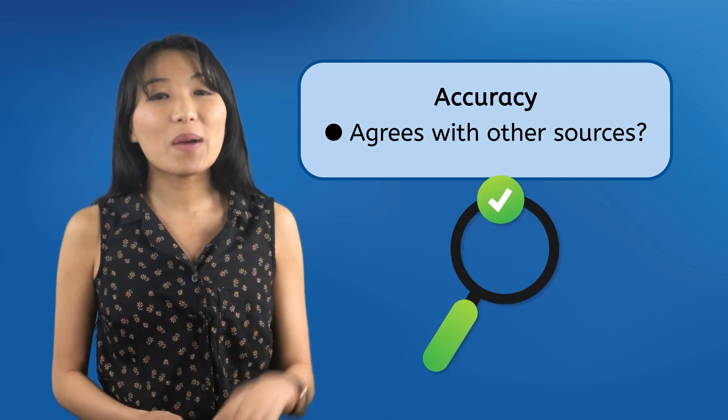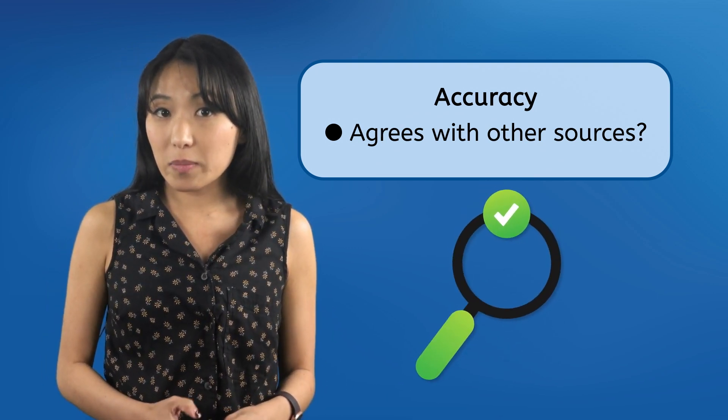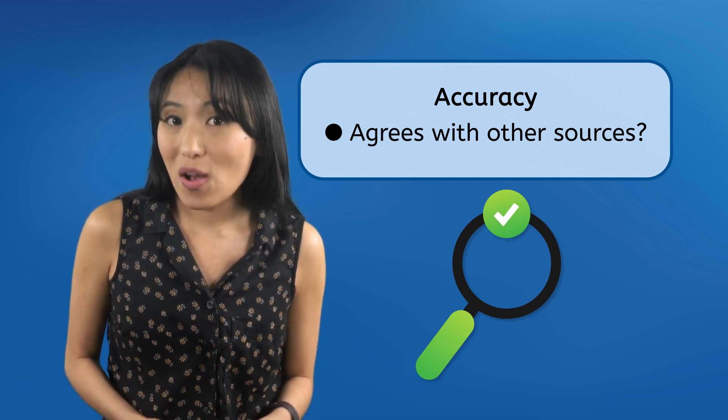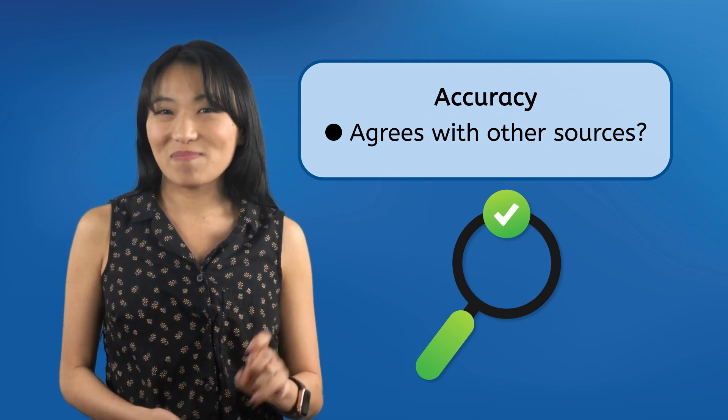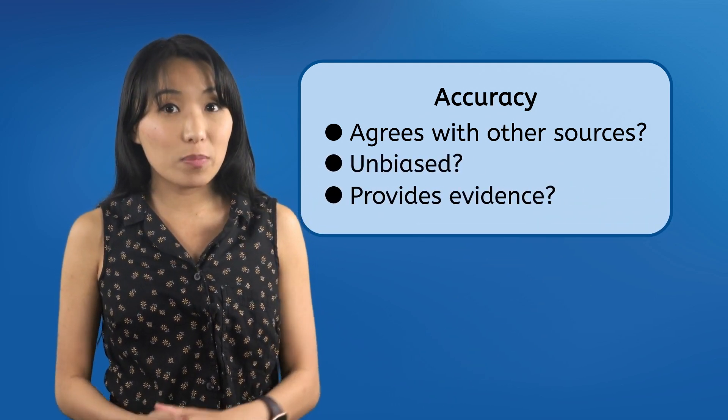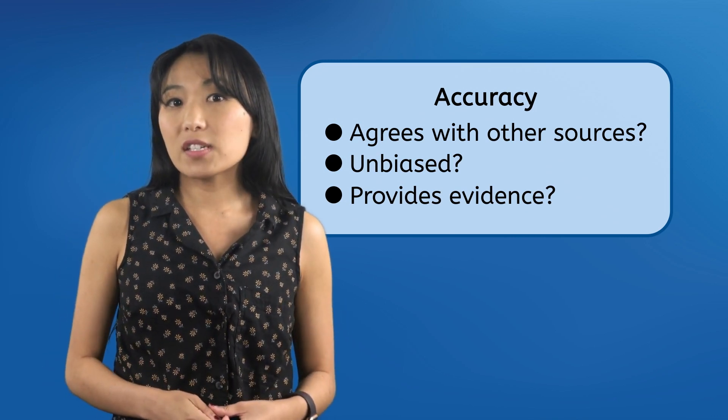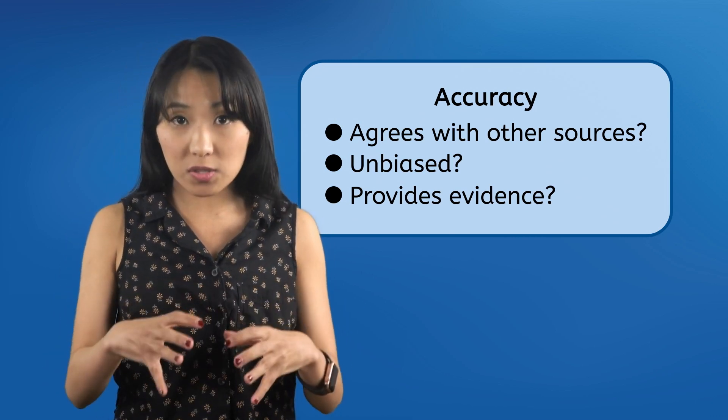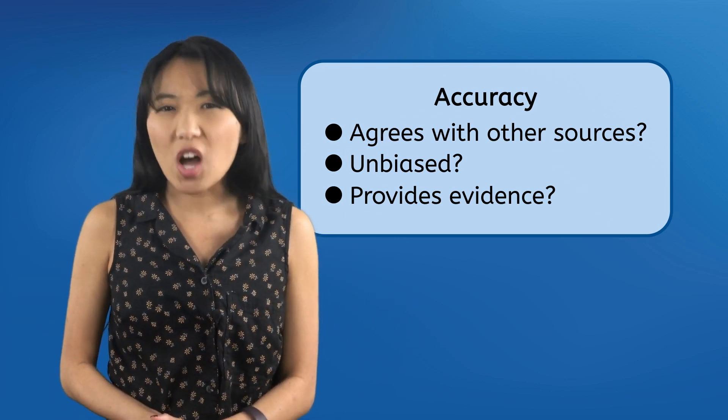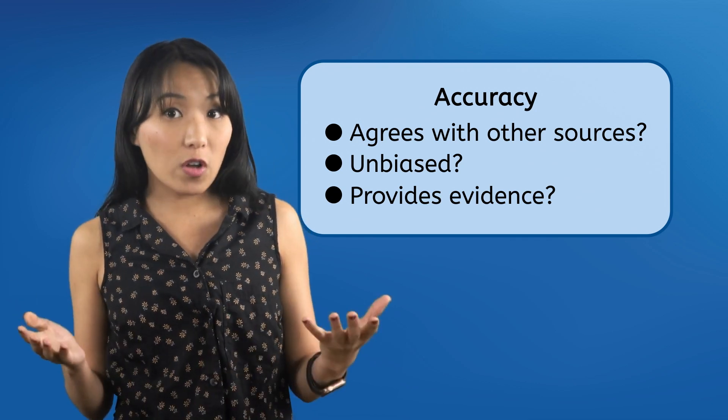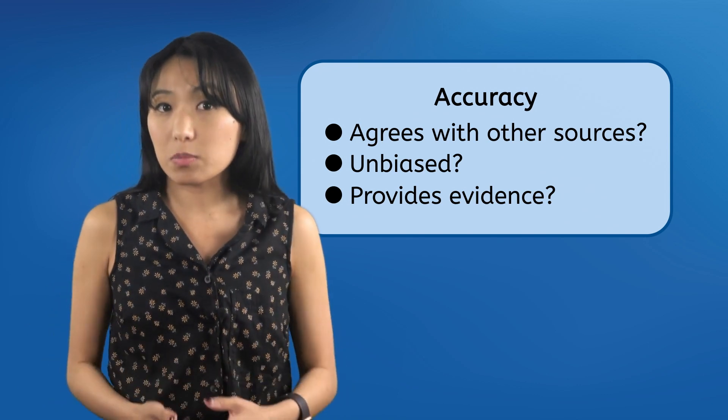A great way to do this is by looking on fact-checking sites. They'll tell you whether information is accurate, explain how they know, and link you to sources backing up their findings. Part of accuracy is also ensuring that the information in your source is presented in an unbiased manner, and that evidence is provided either within the source itself or in the sources that it cites. The goal here isn't to judge whether the information is true or false, but whether it is at least accurate enough to align with other seemingly credible sources.